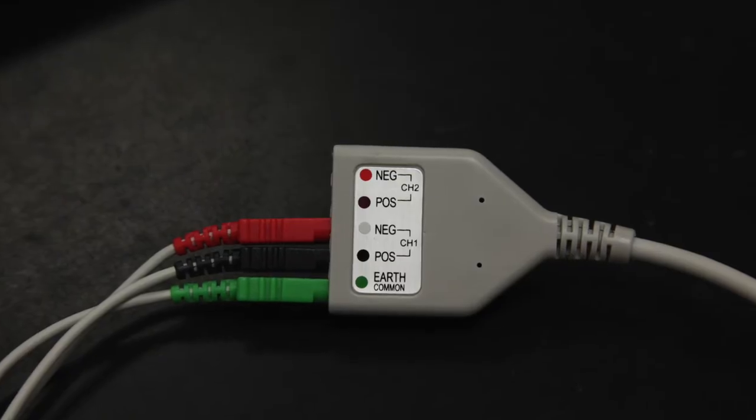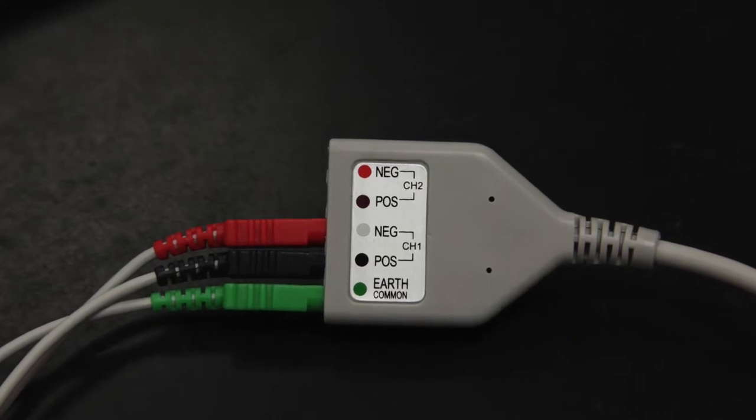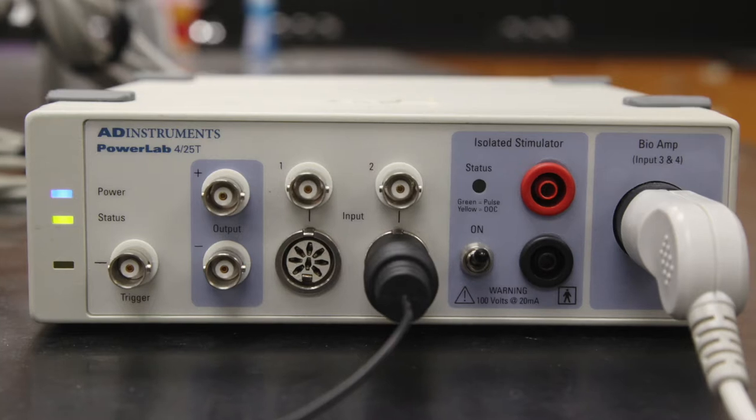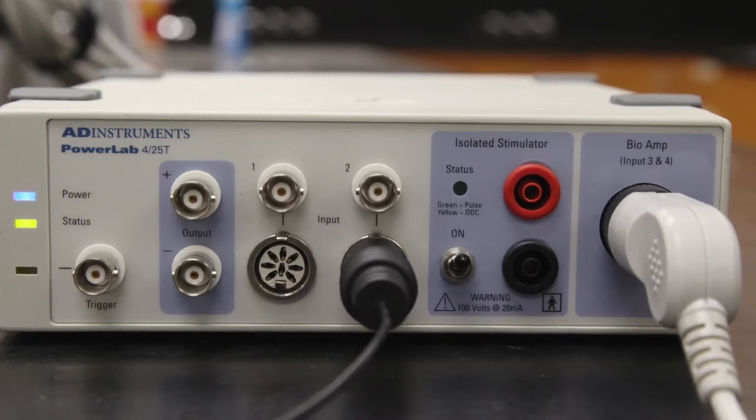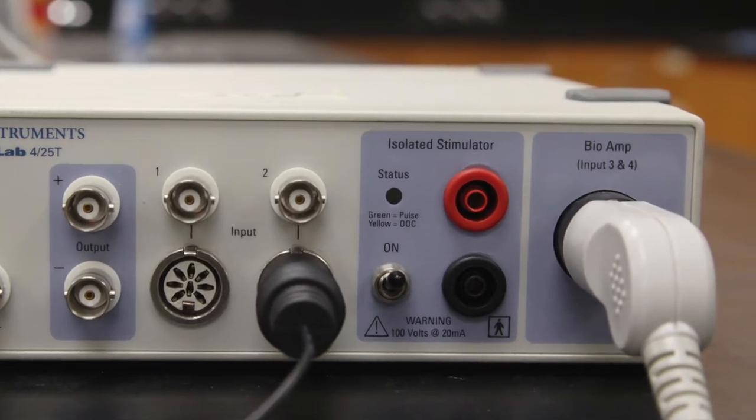First, check the connections. The electrode lead should be plugged into channel 1 as shown. Notice that the red lead is plugged in next to the gray dot. Make sure that the pulse transducer and the bio-amp cable are plugged in as shown. Also make sure the USB cable is plugged into the computer.